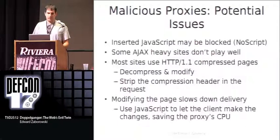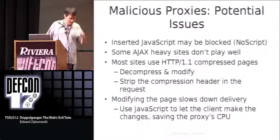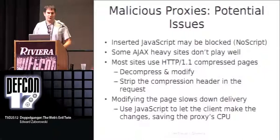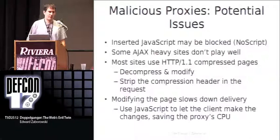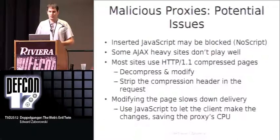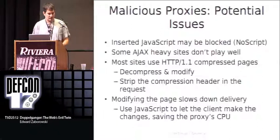Another issue is compressed pages. Because everything uses the HTTP 1.1 standard these days, pages will come through in a binary format, making it hard to make our changes. We have a couple of options: we can decompress and modify the page when it arrives at the proxy, or we can just strip out the accept-encoding header request as it goes out from the client. Also, modifying the page itself slows down delivery, so on a large scale you might run into more issues — another reason to use JavaScript and let the clients do the processing.